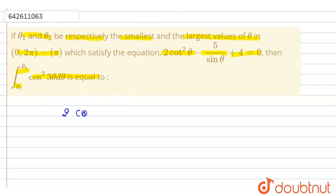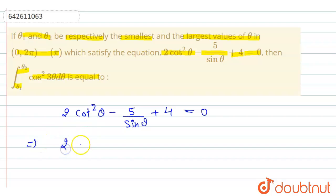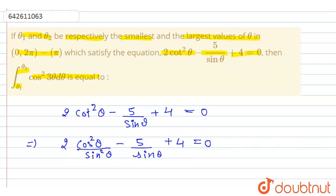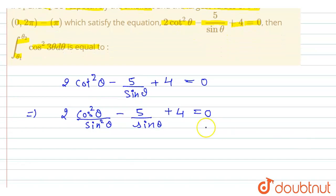To find it, the given equation is 2cot²θ − 5/sinθ + 4 = 0. We write cot²θ as cos²θ/sin²θ. Taking sin²θ as LCM, the equation becomes 2cos²θ − 5sinθ + 4sin²θ = 0.